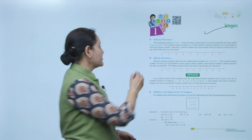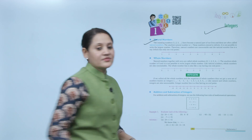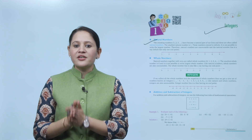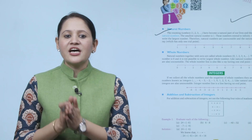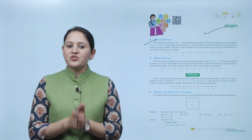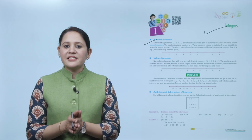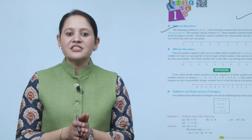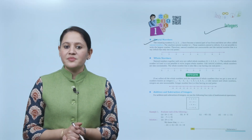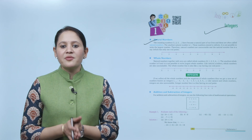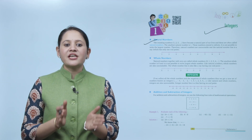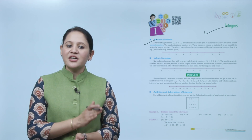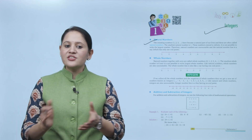First is natural numbers. The counting numbers 1, 2, 3, and so on have become the natural part of our life — these are often called natural numbers. The smallest natural number is 1. These numbers expand infinitely; it is not possible to write the largest number. Therefore natural numbers are uncountable, and the natural number line is a ray which has only one endpoint — that is the starting point. Natural numbers start with 1 and go infinitely.